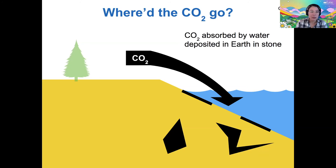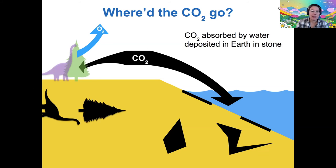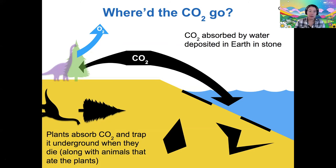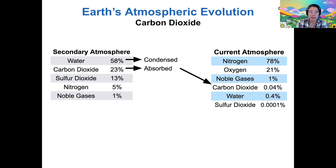Another thing CO2 can do is feed plants, which then create oxygen, and also feed animals, which then die and become locked within Earth's crust. So there are many different ways for CO2 to become part of the crust. Essentially, this absorbed CO2 becomes trapped. That's what happened to our CO2 — the 23% of our secondary atmosphere that was CO2 dropped down to just 0.04% because much of it was absorbed into the land by those different routes.